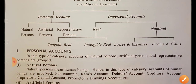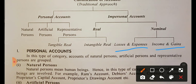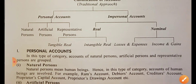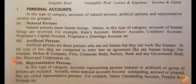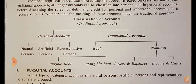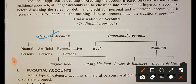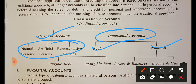The nominal account covers losses and expenses accounts. If you have business expenses, then you debit; if you have income or gain, then you credit. So personal, real, and nominal — these are the three classifications. Clearly, personal accounts have three categories, real and nominal are two more, making five categories in total.